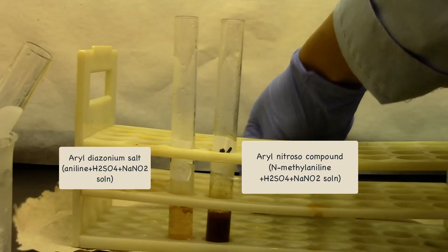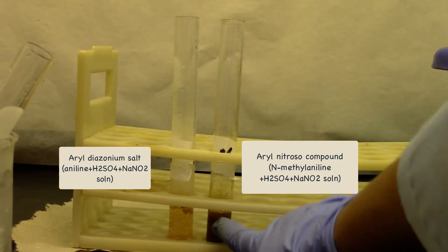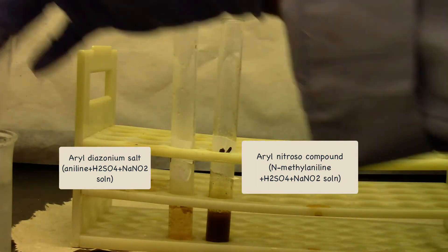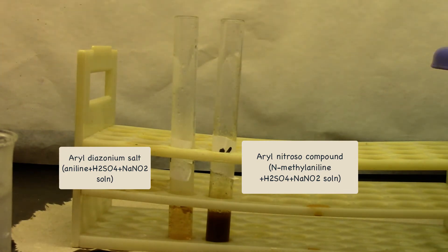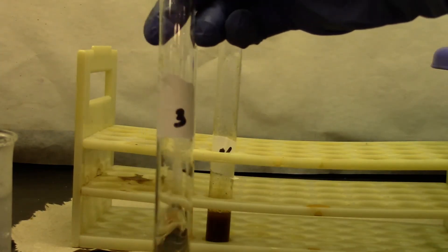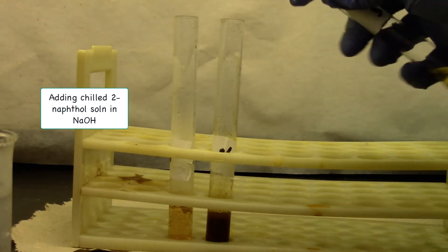Primary amine produces a red-orange dye with beta-naphthol solution, which is my solution 3.